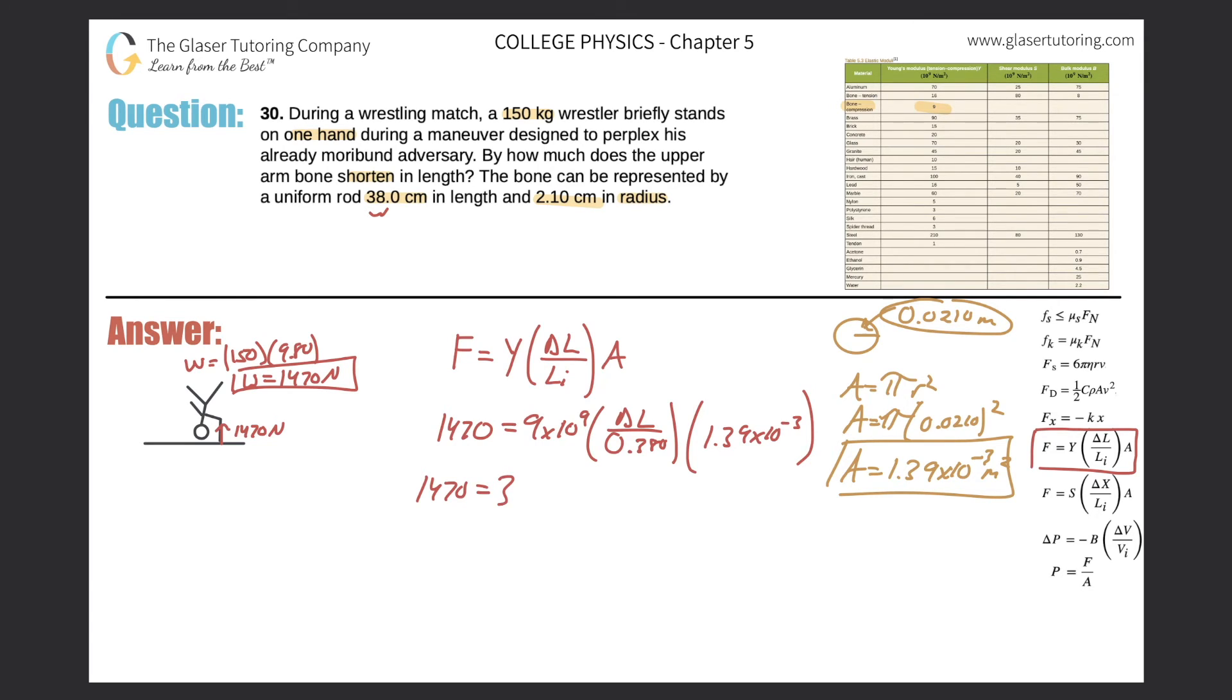So we get a value here of 3.29 times 10 to the 7, multiplied by the change in length. So now just divide out the 3.29 times 10 to the 7.